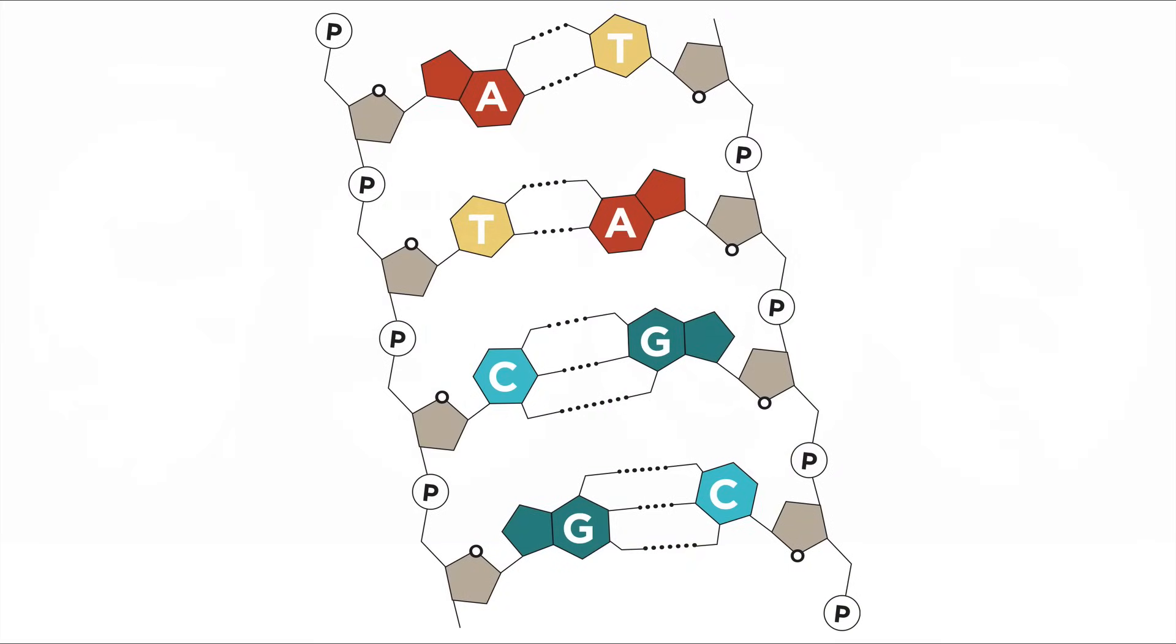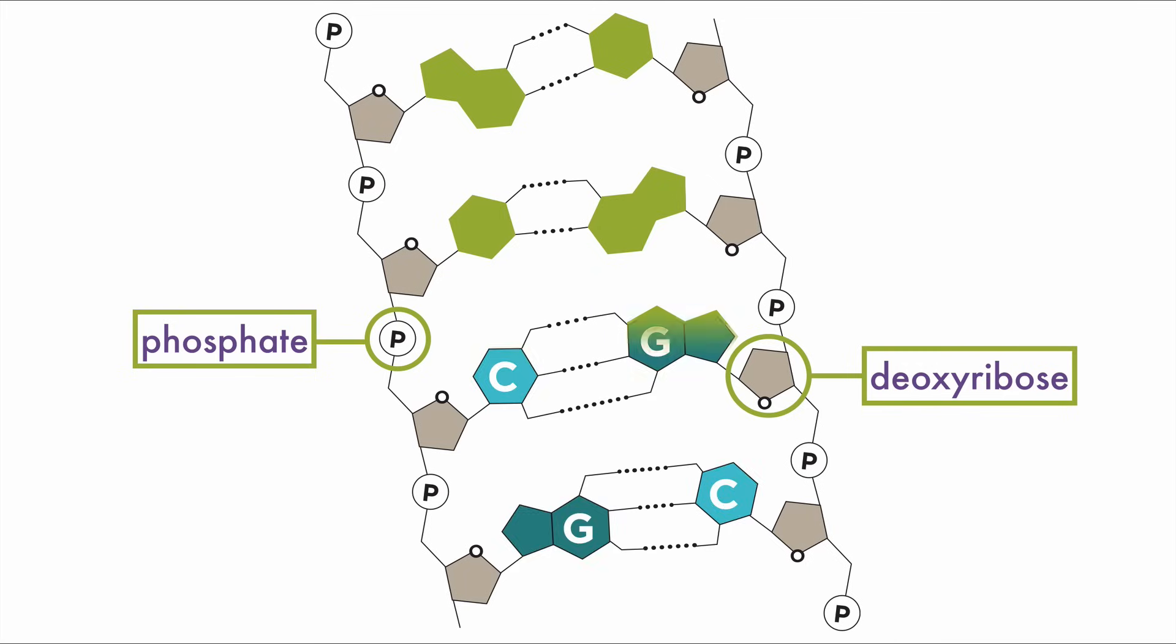Each of these scientists played a role in piecing together the structure of DNA. They learned that along the sides of the molecule was a backbone made of alternating sugar and phosphate molecules. On the inside, like the rungs of a ladder, are the nitrogen bases.